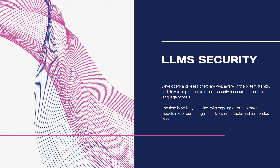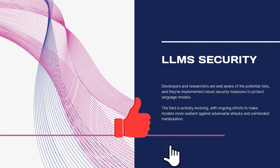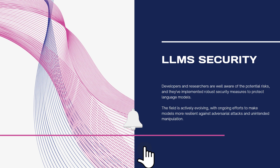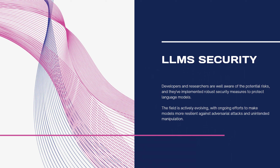Developers and researchers are well aware of the potential risks and they've implemented robust security measures to protect large language models. These measures include encryption, access controls, and continuous monitoring to detect and prevent malicious activities. The field is actively evolving with ongoing efforts to make models more resilient against attacks and unintended manipulation. It's a collaborative endeavor to strike a balance between innovation and security.